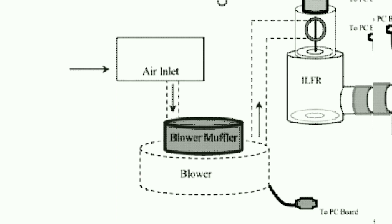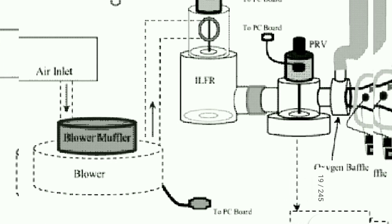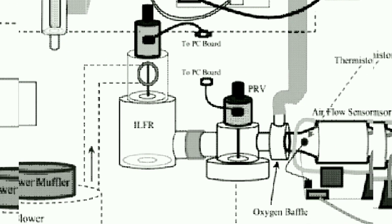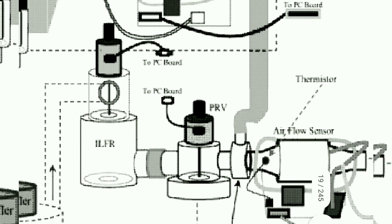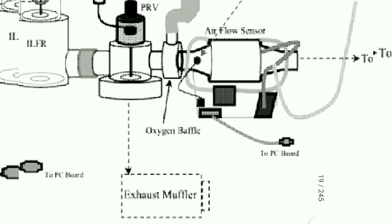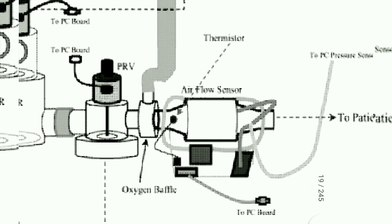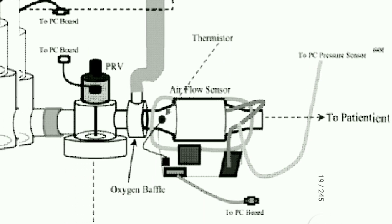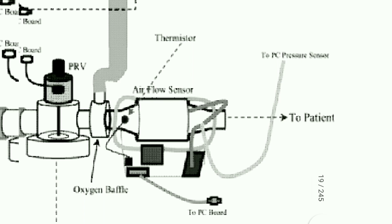From the blower muffler it goes to the blower, then to the ILFR — the inline flow restrictor — which has two PCB port connections, and then it comes to the PRV, the pressure regulation valve. There is also an exhaust muffler. From the oxygen baffle it goes to an airflow sensor where there is a thermistor to check the temperature, and then it goes to the patient.